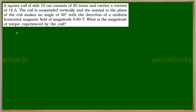A square coil of side 10 cm consists of 20 turns and carries a current of 12 amperes. The coil is suspended vertically. The normal to the plane of the coil makes an angle of 30 degrees with the direction of a uniform horizontal magnetic field of magnitude 0.80 tesla. What is the magnitude of torque experienced by the coil?